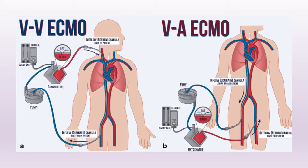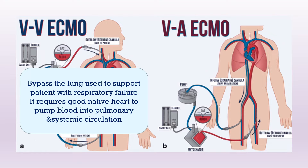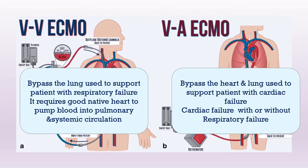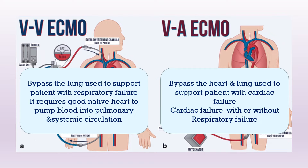There are two types of ECMO: respiratory ECMO or VV ECMO, and cardiac ECMO or VA ECMO. VV ECMO is used to bypass the lung and can support patients with respiratory failure; it requires a good native heart to pump blood into pulmonary and systemic circulation. VA ECMO bypasses both the heart and the lung, used to support patients with cardiac failure, with or without respiratory failure.